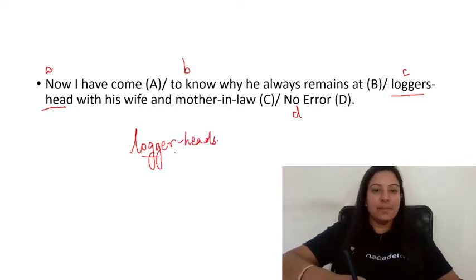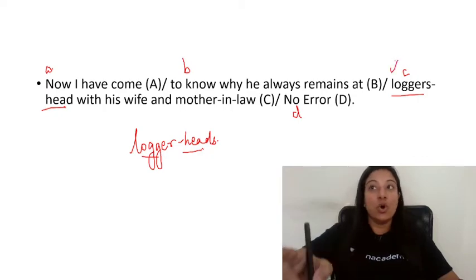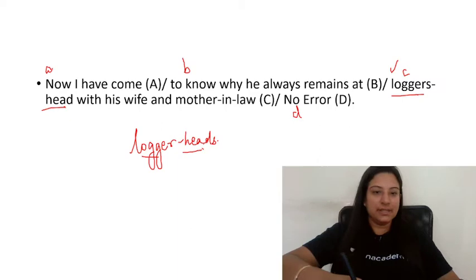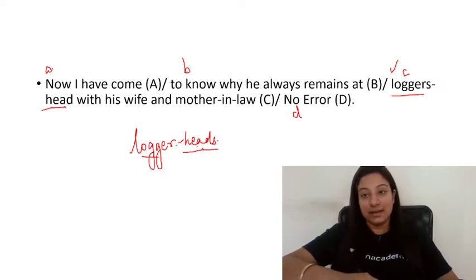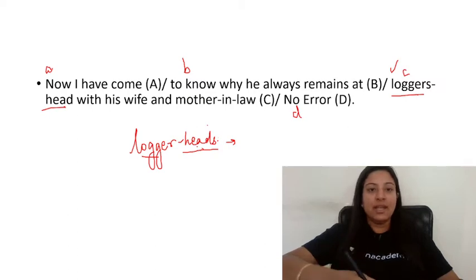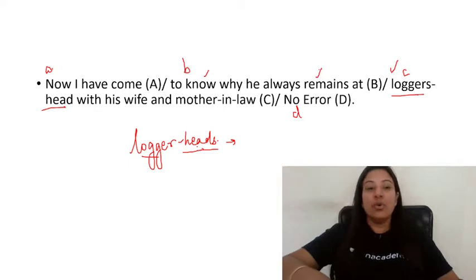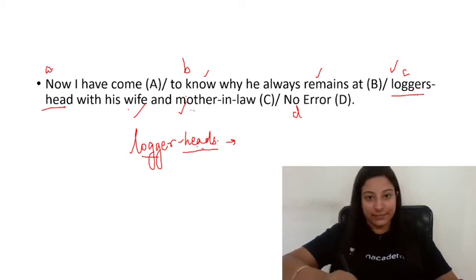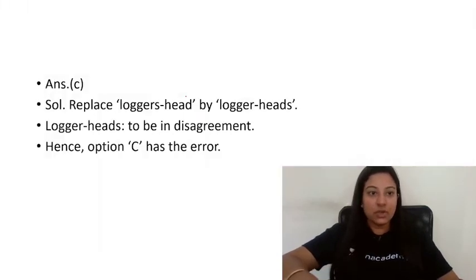'Loggerheads' is called a compound noun. 'Loggerheads' means when you are fighting or not getting along with someone — to be at loggerheads with someone. So the sentence means: I have now come to know why this person always remains at loggerheads with his wife and mother-in-law. So 'loggerheads' is correct here.